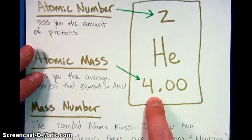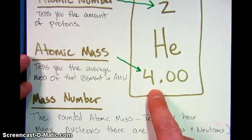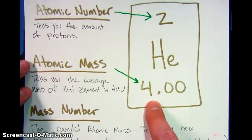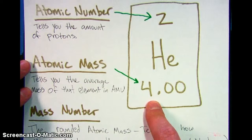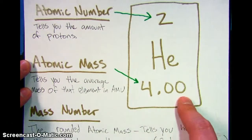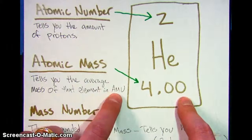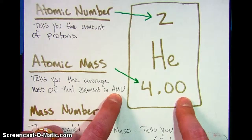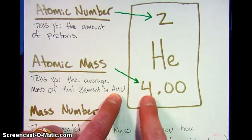The number at the bottom tells you the atomic mass. If you were to take all the helium and then find out its weight, it would come out to an average of 4.00. And this is in the units called AMU, which stands for atomic mass units. So this number represents an average.